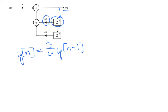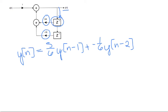And then we're adding that to another delay block as shown here, and it has a gain of negative 1/6, so negative (1/6) y of n minus 2. And then we're adding both of those to our input with a gain of 1, so we have plus x of n.